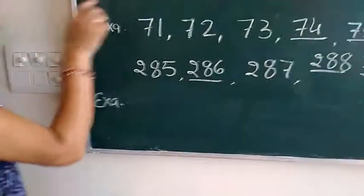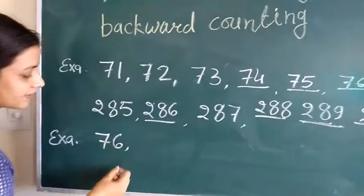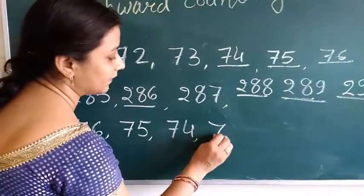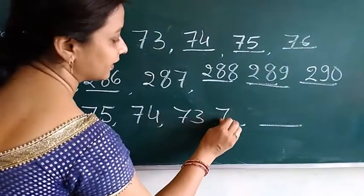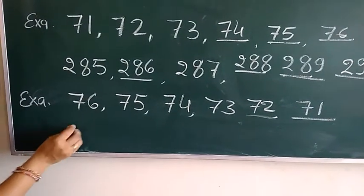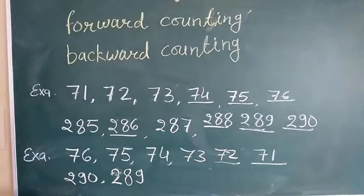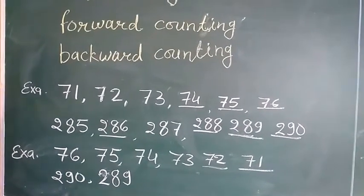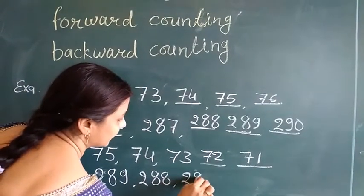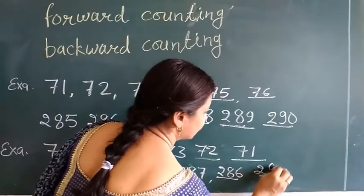Now, another example of backward counting. Taking the same examples: from 76 going backward — 75, 74, 73, 72, 71. And from 290 going backward — 289, 288, 287, 286, 285.